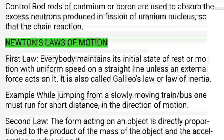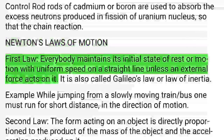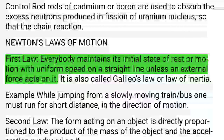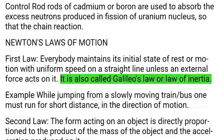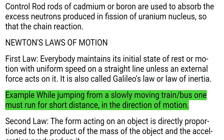Newton's Laws of Motion — First Law: Every body maintains its initial state of rest or motion with uniform speed in a straight line unless an external force acts on it. It is also called Galileo's law or the law of inertia. Example: While jumping from a slowly moving train or bus, one must run for a short distance in the direction of motion.